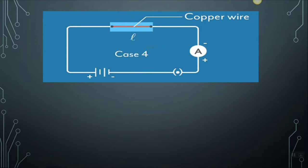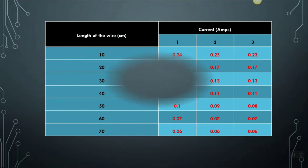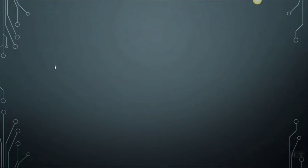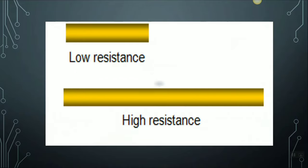For one last case, we replace the nichrome wire with a copper wire. The length and cross-sectional area are the same as the original wire but the material has changed entirely. When you measure the current, you will notice it is more than I1. Now, from the experimental data, as the length of the wire increases, the current reduces by the same factor. It implies that current is inversely proportional to the length of the wire, and by Ohm's law, the current is inversely proportional to resistance. So resistance is directly proportional to the length of the wire — more the length, more the resistance.